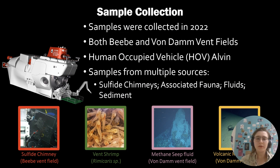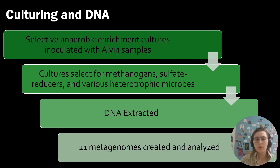Our samples were collected in 2022 from both Beebe and Von Damm using the Human Occupied Vehicle, Alvin. These samples were taken from multiple sources, including sulfide chimneys, associated fauna, fluids, and sediment. We used these samples to inoculate selective anaerobic enrichment cultures that selected for various methanogens, sulfate reducers, and various heterotrophic microbes. From there, we extracted the DNA and sequenced 21 metagenomes to analyze.